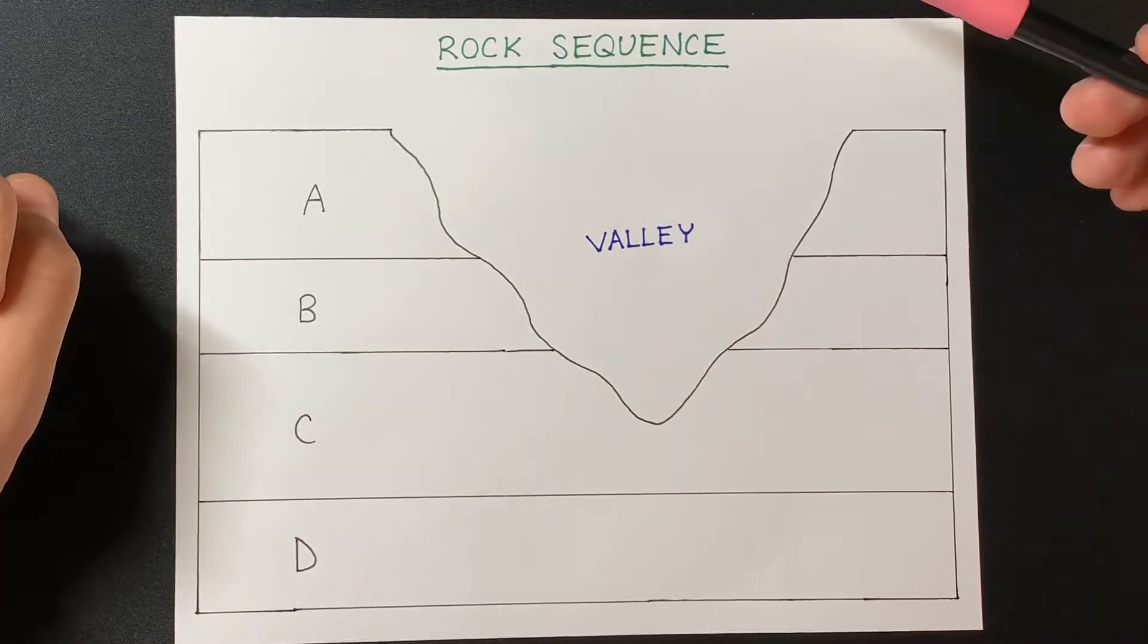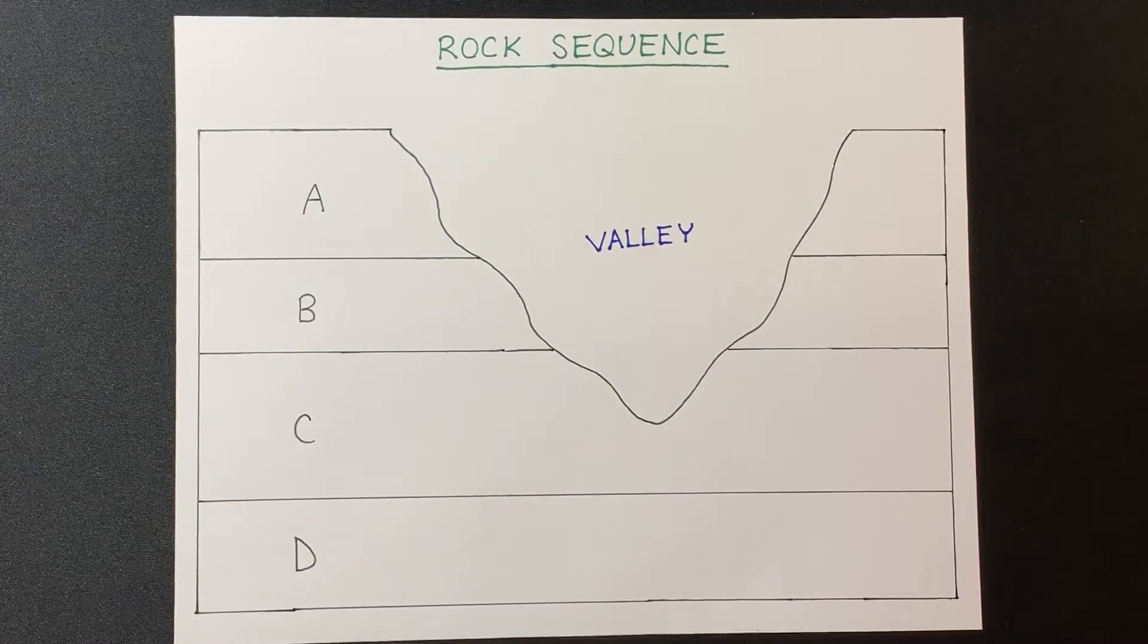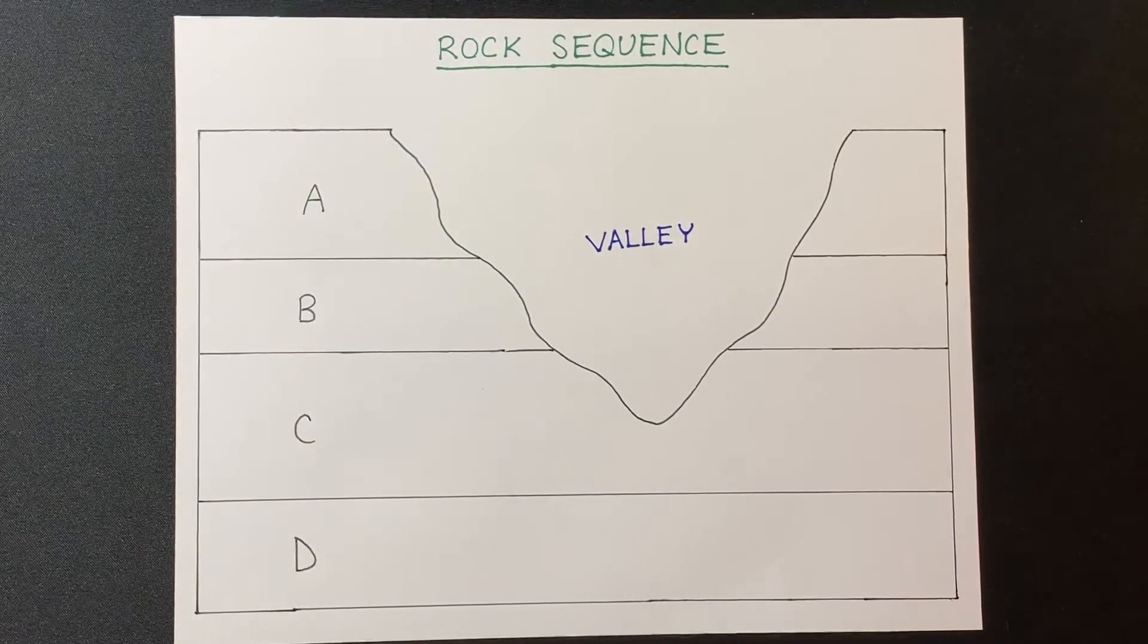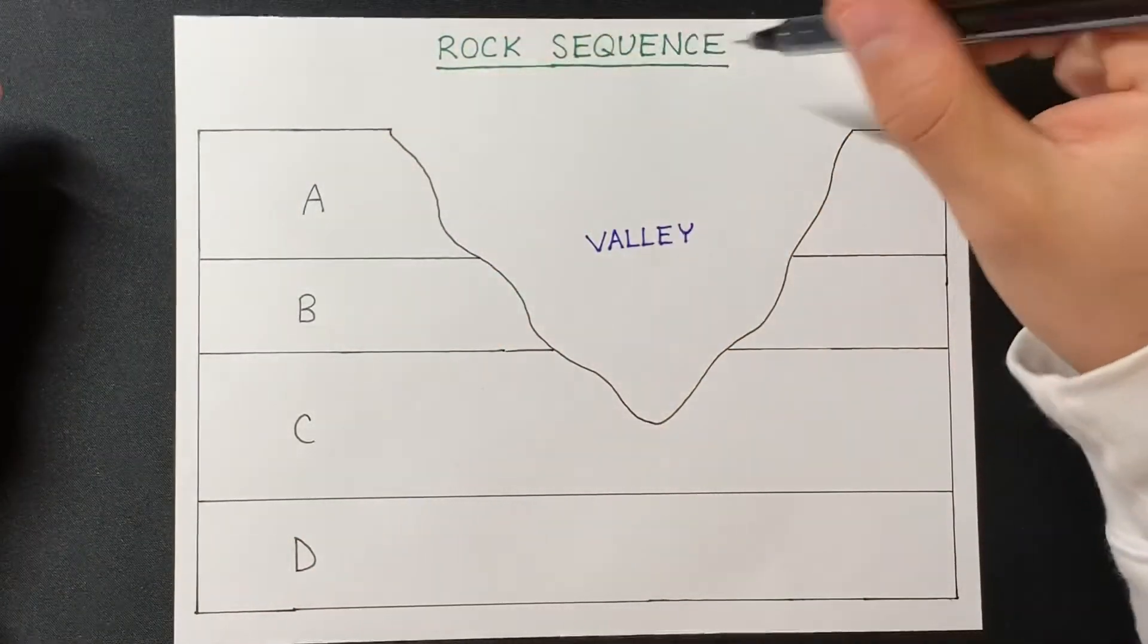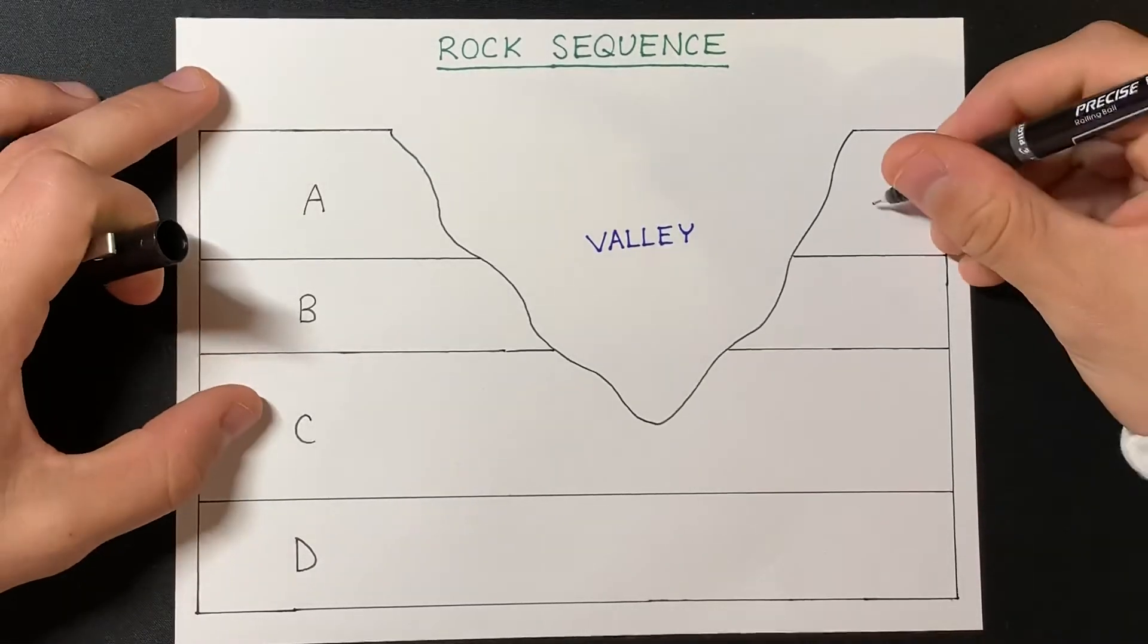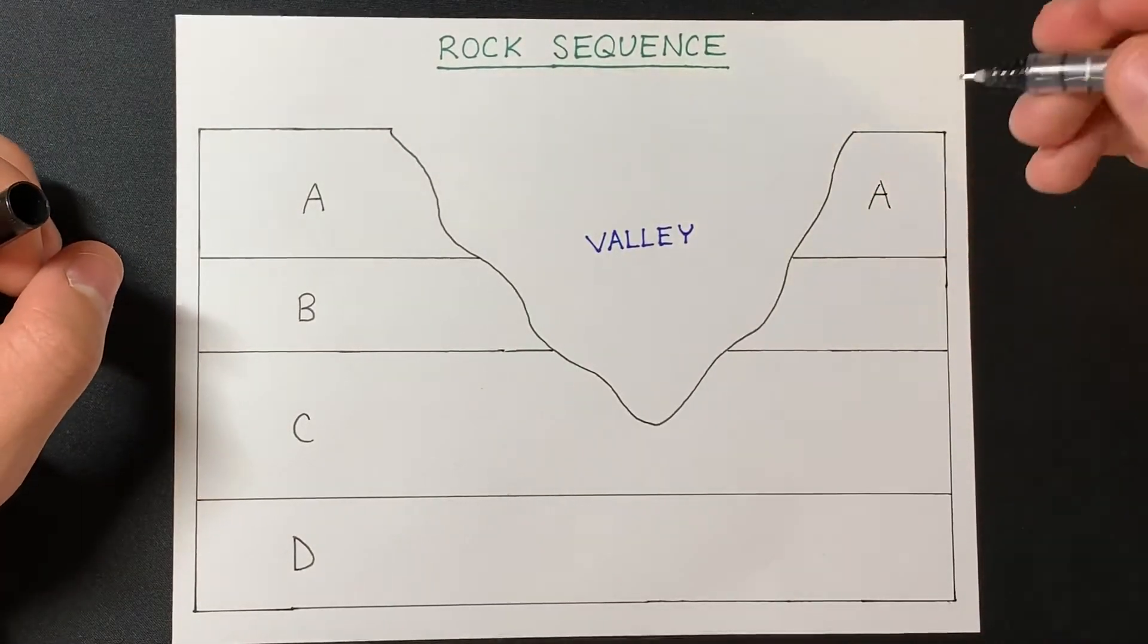So it is safe to assume that rock layer A was originally connected to this layer over here. So these are actually the same rock layer.